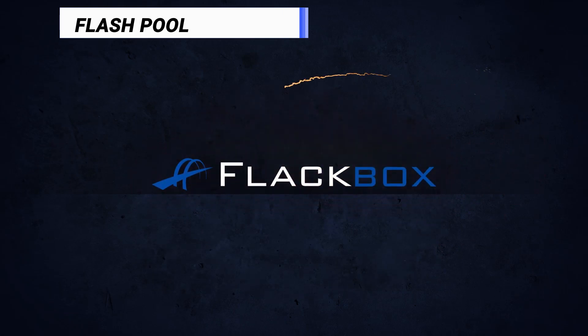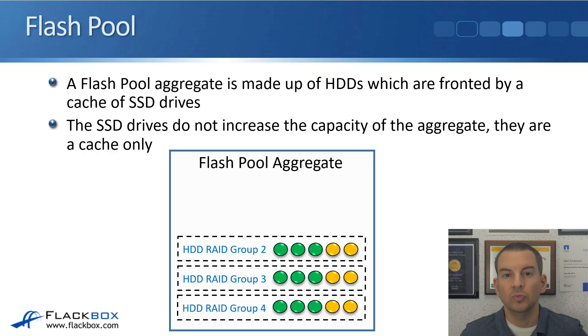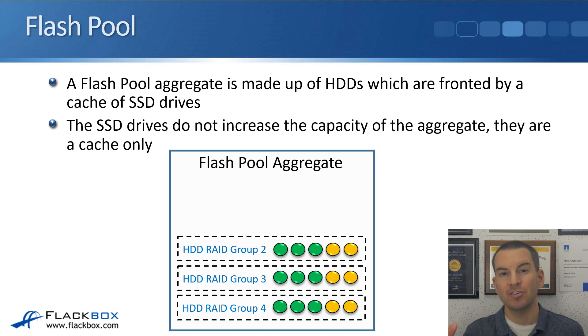In this lecture, you'll learn about FlashPool. Like FlashCache, FlashPool is an ONTAP virtual storage tiering technology which helps improve the performance of your cluster. You saw in the last lecture that FlashCache is a PCI Express card with memory on board that you fit into your controller, which increases the size of the system memory cache.